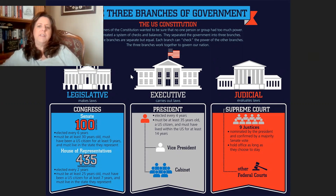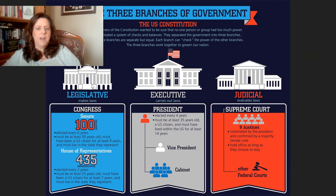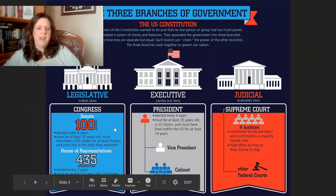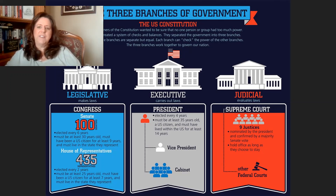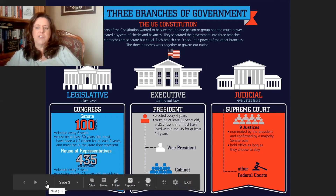At one end, you have the Capitol building, which is where the legislature is — that's who makes the laws. There are two parts of it, with wings on each side: one has the Senate and one has the House of Representatives. Last week we spent a lot of time on the executive branch, and then there's the judicial branch where our laws are interpreted.